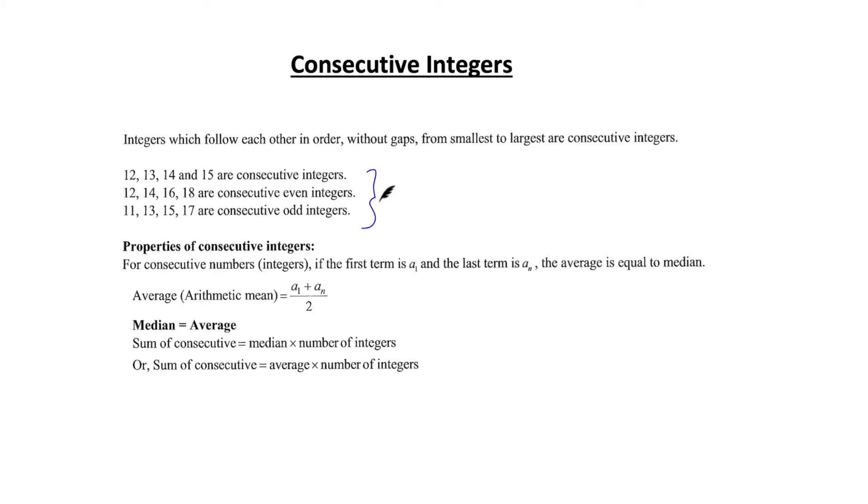12, 13, 14 and 15 are consecutive integers. 12, 14, 16, 18 are consecutive even integers, then you can have odd integers as well like 11, 13, 15 and 17.